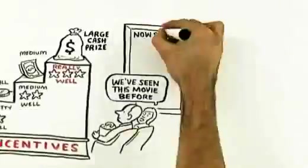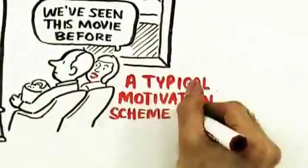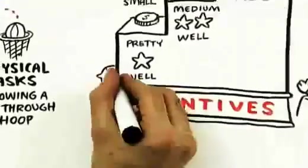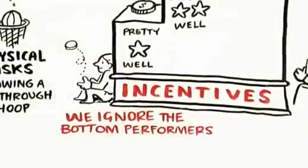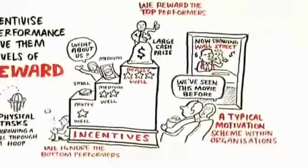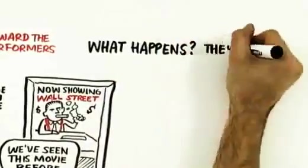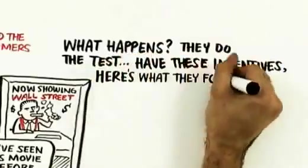We've seen this movie before. This is essentially a typical motivation scheme within organizations, right? We reward the very top performers. We ignore the low performers and the folks kind of in the middle. So what happens? They do the test. They have these incentives. Here's what they found out.